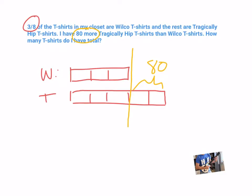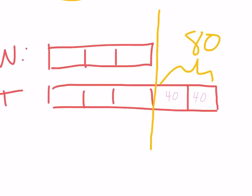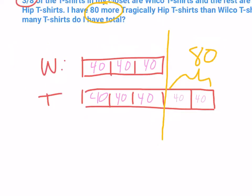80 divided by 2 is 40. Now remember, all of my blocks are the same size. So once I've figured out those two, that means everything is 40, because they're equal size.